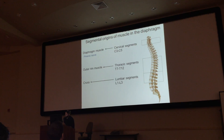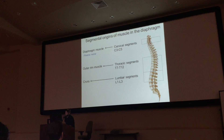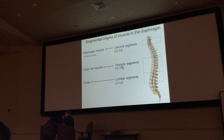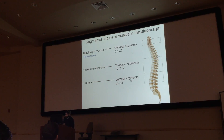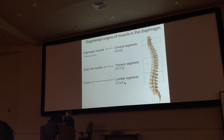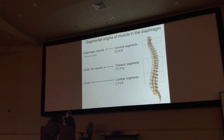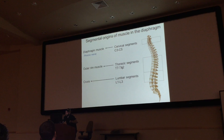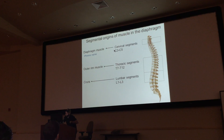He mentioned that your diaphragm comes from different spinal levels. Somites from C3–C5 eventually make your diaphragmatic muscle and central tendon. Your outer costal muscle comes from somites at T7–T12. Your crura come from lumbar segments L1–L3. This makes sense because the phrenic nerve, which innervates most of the diaphragm, comes from C3–C5, and the costal portions are innervated by the lower intercostal nerves from T7–T12.